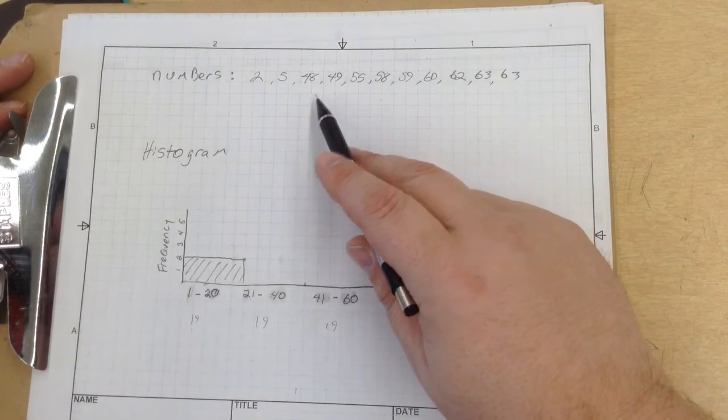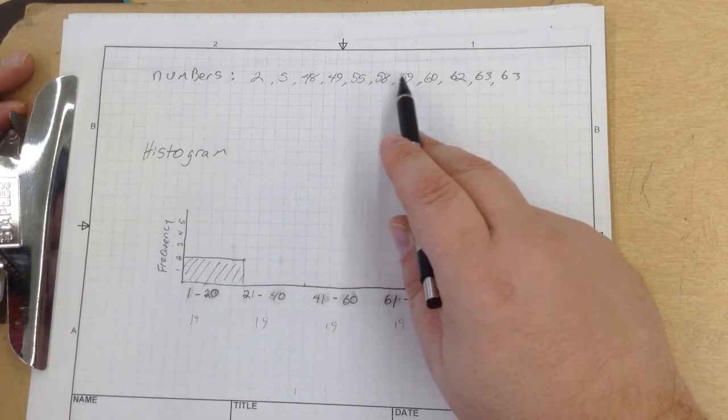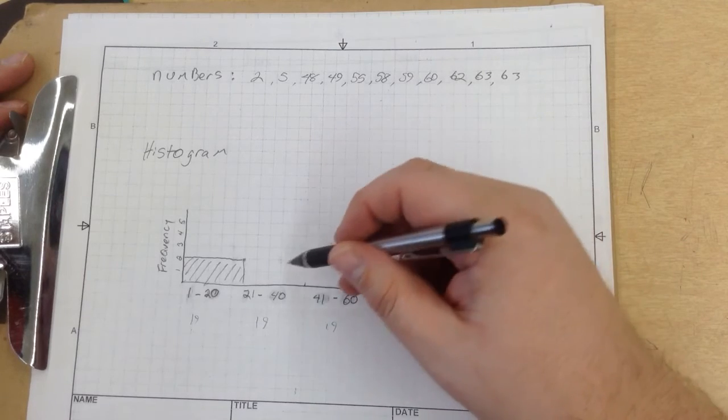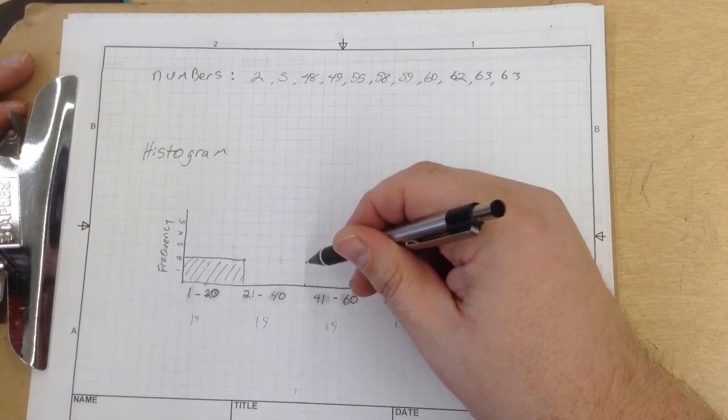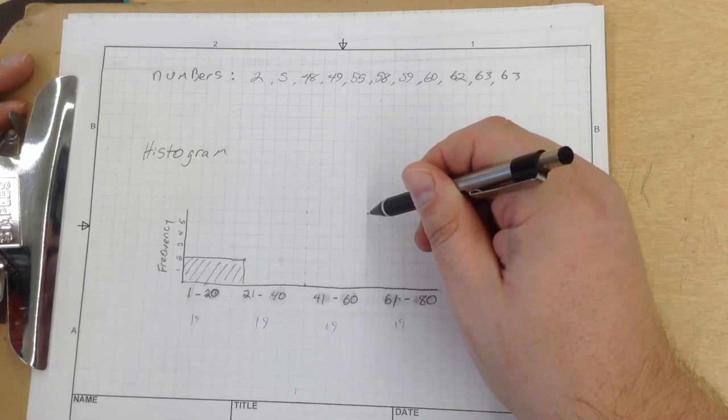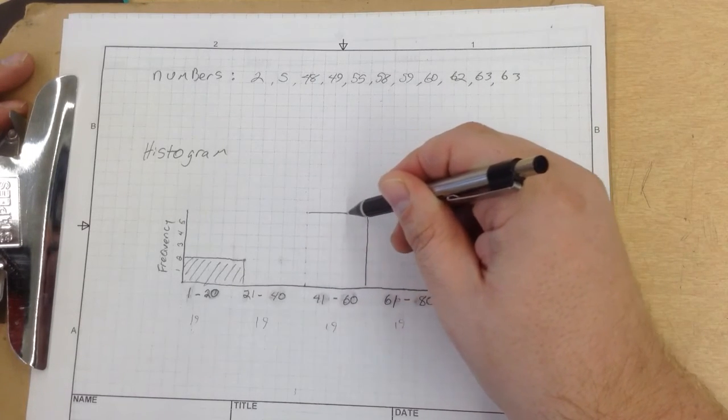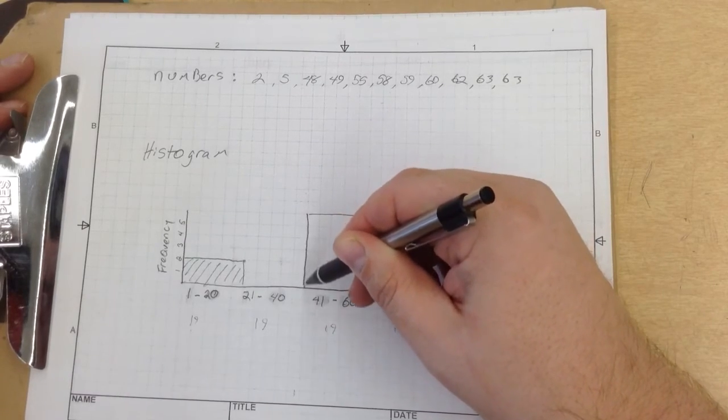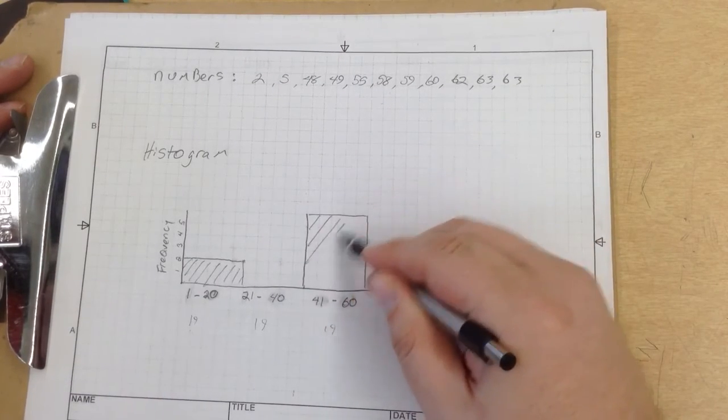41 through 60, we've got 1, 2, 3, 4, 5, 6. So right here, 1, 2, 3, 4, 5, 6. I've got it over 5. So I'm going to shade that in right there.